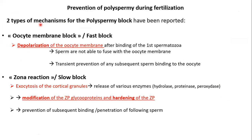There are two mechanisms involved in the block of polyspermy. In the first mechanism, it is the oocyte that is implicated. In the second mechanism, it is the zona pellucida that is implicated. The mechanism where the oocyte is implicated is called the fast block, also known as the oocyte membrane block. It is due to the depolarization of the oocyte membrane after the binding of the first spermatozoa.